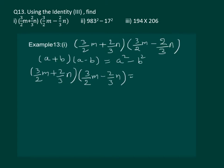Substituting a as 3 by 2m and b as 2 by 3n, we get 9 by 4m square minus 4 by 9n square as the required answer.